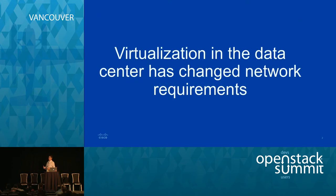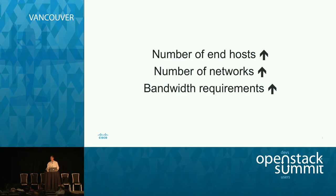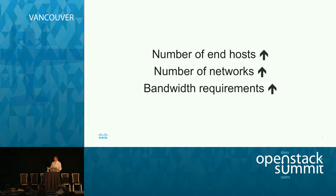I'll go through the introduction slides very quickly and get to the interesting stuff. I'd like to start briefly by motivating VXLAN, how it's come about and other technologies like it. Over the last decade or so, virtualization in the data center has really dramatically changed network requirements. We have virtualization on hypervisors — instead of single physical servers, we now have 10, 20, maybe 100 virtual servers, an order of magnitude increase in end hosts. Similarly, the number of networks has increased and bandwidth requirements continue to go up.